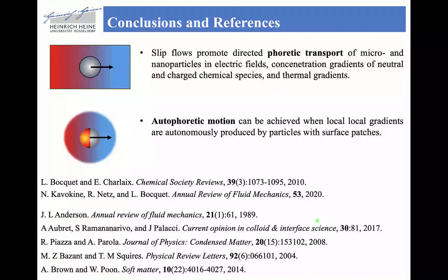This leads me to the conclusion of this lecture. In the last hour and a half, we saw that slip flows are able to promote direct phoretic transport of micro and nanoparticles in electric fields, in concentration gradients of neutral or charged species, and in gradients of temperature. After that, we replicated this type of interfacial transport in an autonomous fashion, where autophoretic motion is achieved when local gradients are autonomously produced by particles equipped with surface patches.